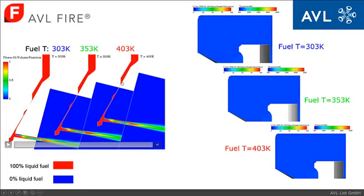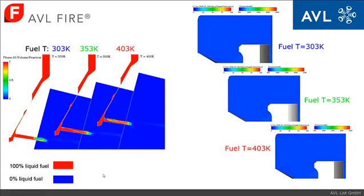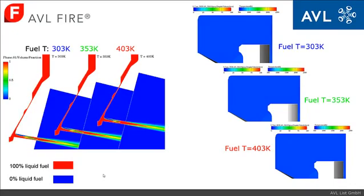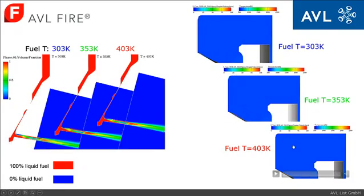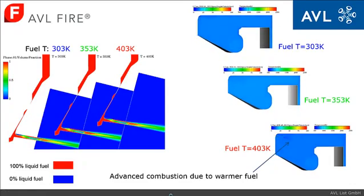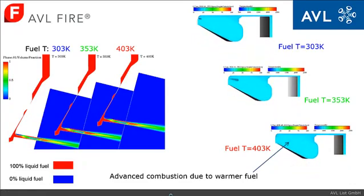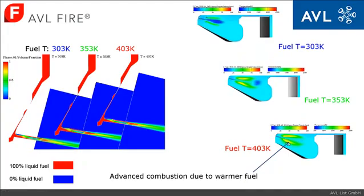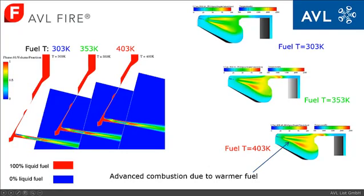Again we see the volumetric fraction results and the red color shows 100% liquid. The flow is somewhat similar, but the amount of vapor generated is slightly different for different temperature levels due to different fluid properties. The three nozzle files are used as input for spray and combustion on the right hand side, and we can clearly see advanced combustion for the warmest fuel case at 403 Kelvin on the bottom compared to the other two cases.